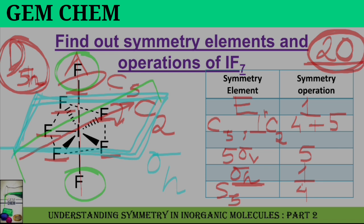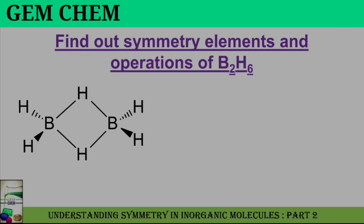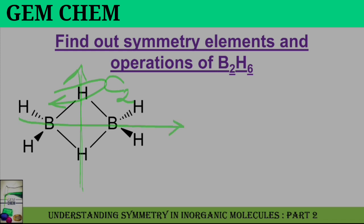Now we will look at one of the most important molecules, which is also very important for exams — B2H6. Considering its three-dimensional structure, one C2 can pass through this plane. Rotating by 120 degrees gives the same structure, so there is another C2 passing through the molecule. A third C2 comes out toward you from the back. So B2H6 has three C2 axes.